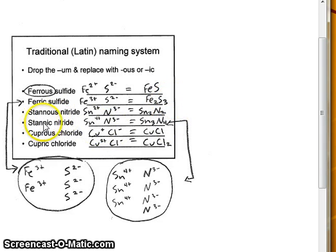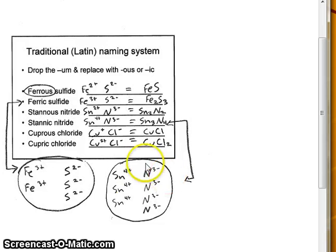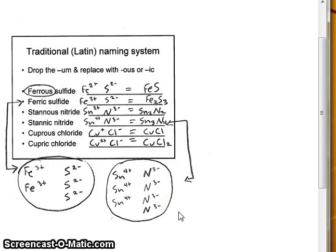Stannic nitride is tin positive four with nitride minus three. We must have a ratio of Sn₃N₄. Three of the plus four tin ions gives a total of positive twelve, and four copies of the minus three nitride ion gives minus twelve. The addition of the two gives a net charge of zero. All ionic compounds should have a net charge of zero.